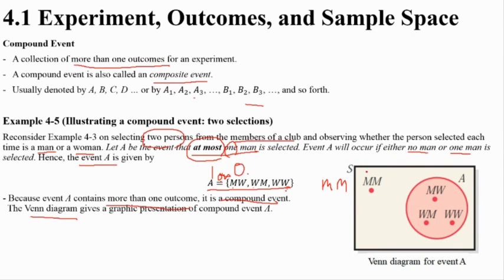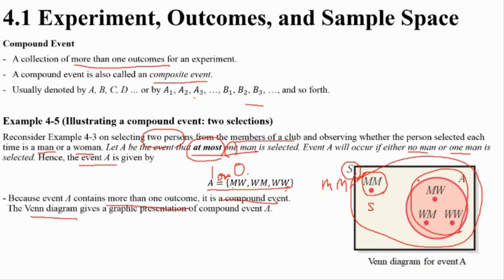We can illustrate this with a Venn diagram where S is the sample space. The region for 'at most one man' is a compound event, while the man-man outcome alone is a simple event.